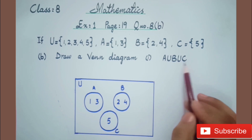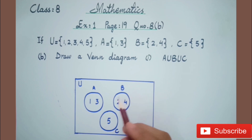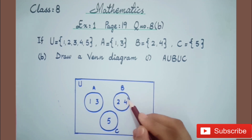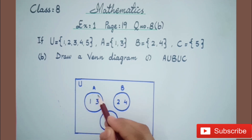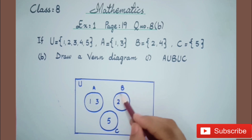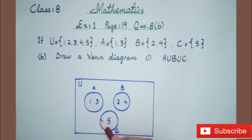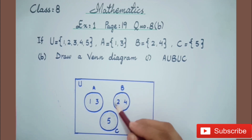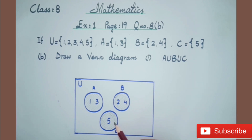Then for A union B union C — union means combine all sets — when we combine them, the answer contains all the elements. To show our answer in the Venn diagram, we shade the circles with a pencil or color them. The shading represents the answer; without shading, the answer is not visible. So we show the answer by shading the relevant regions.